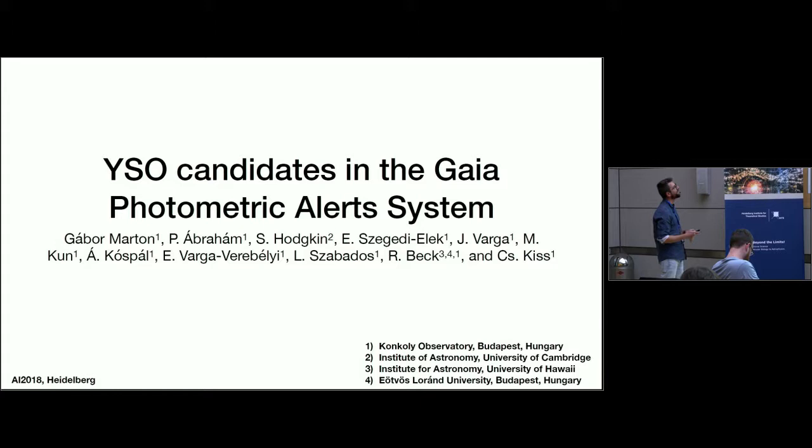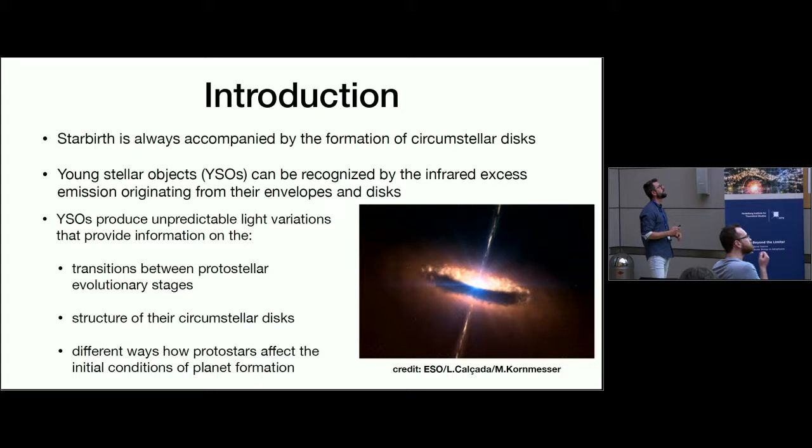Let's start with a small introduction. Star birth is always accompanied by the formation of a circumstellar disk which modifies the light emitted by the stars. The young stars are heated so they have their own radiation which is mostly in the infrared, near and far. YSOs can be recognized by the infrared excess.